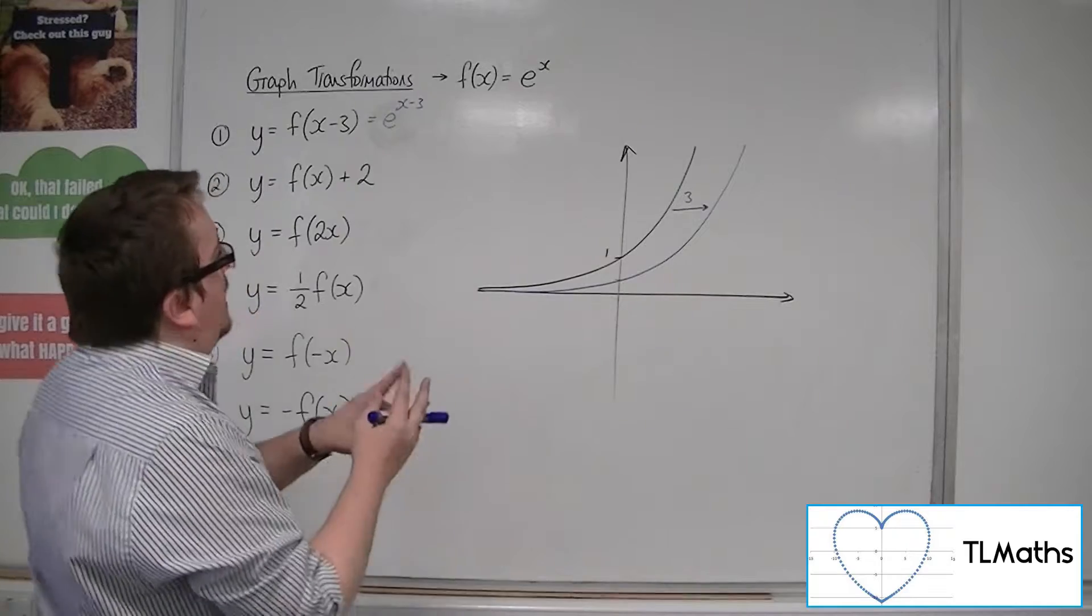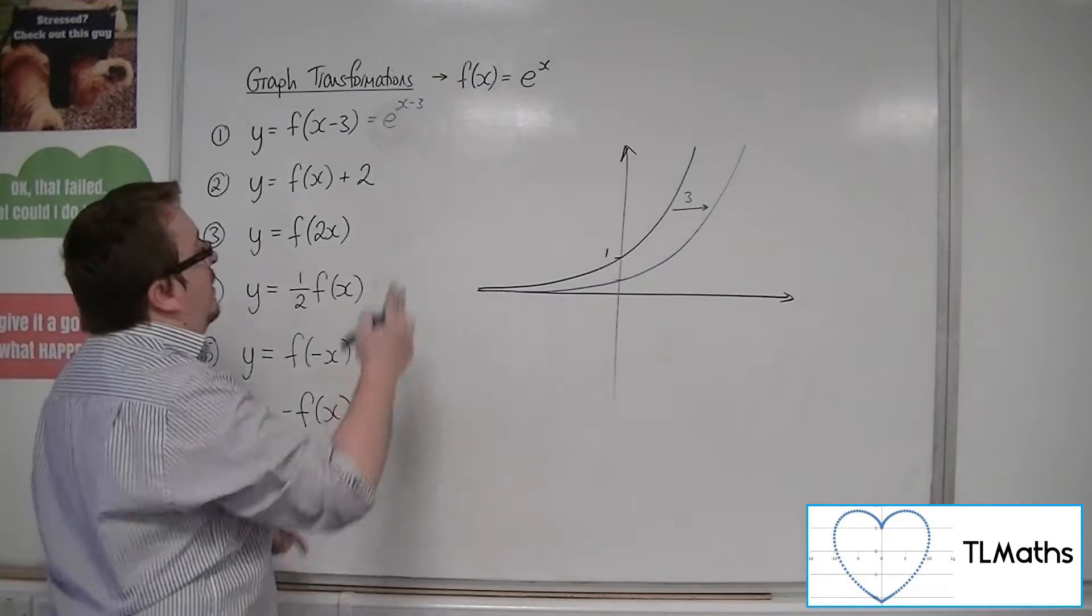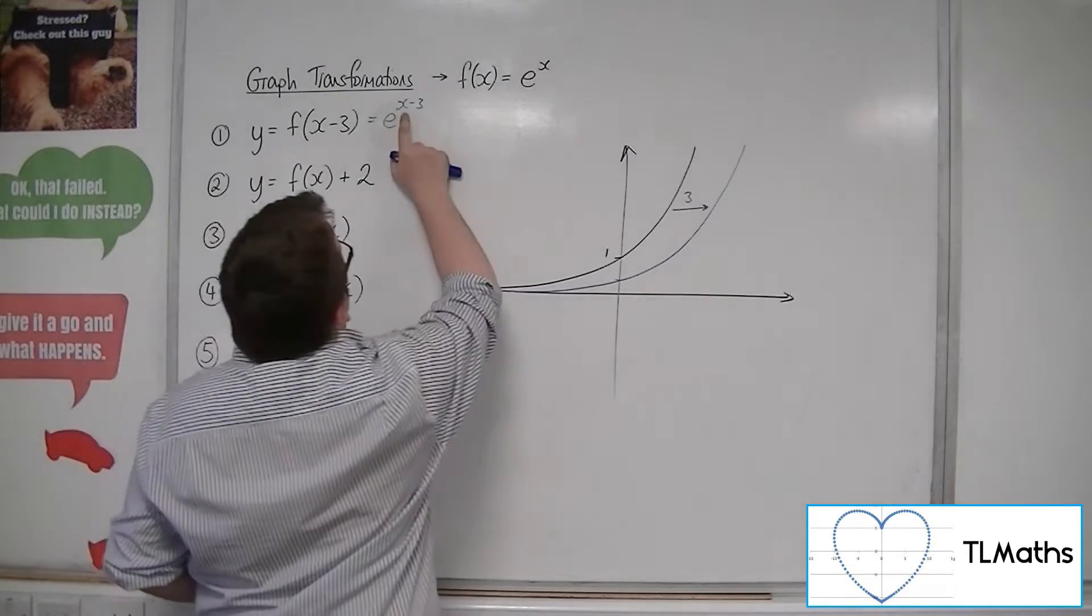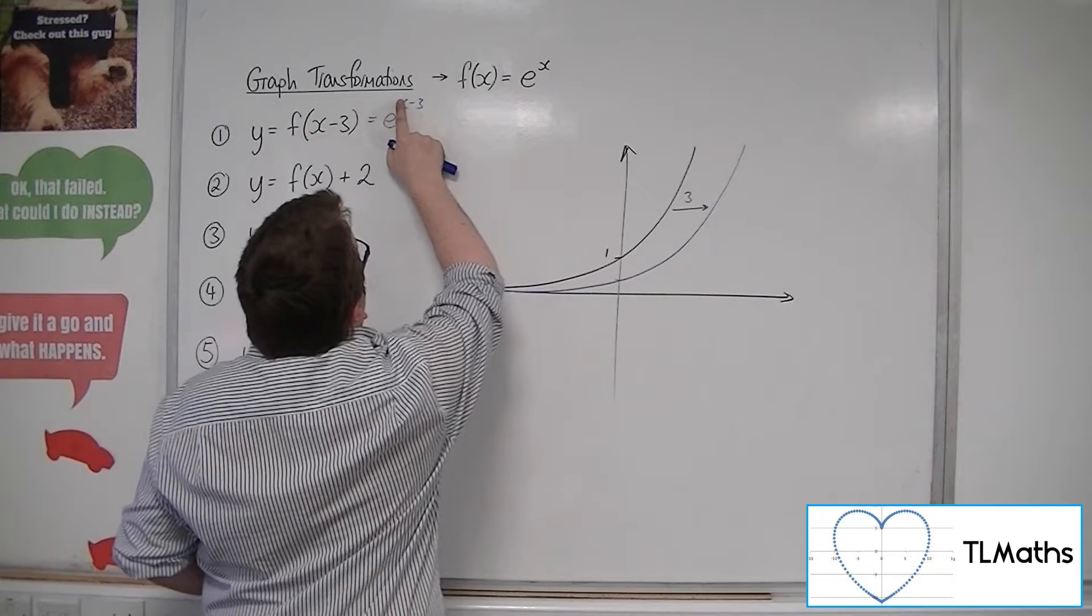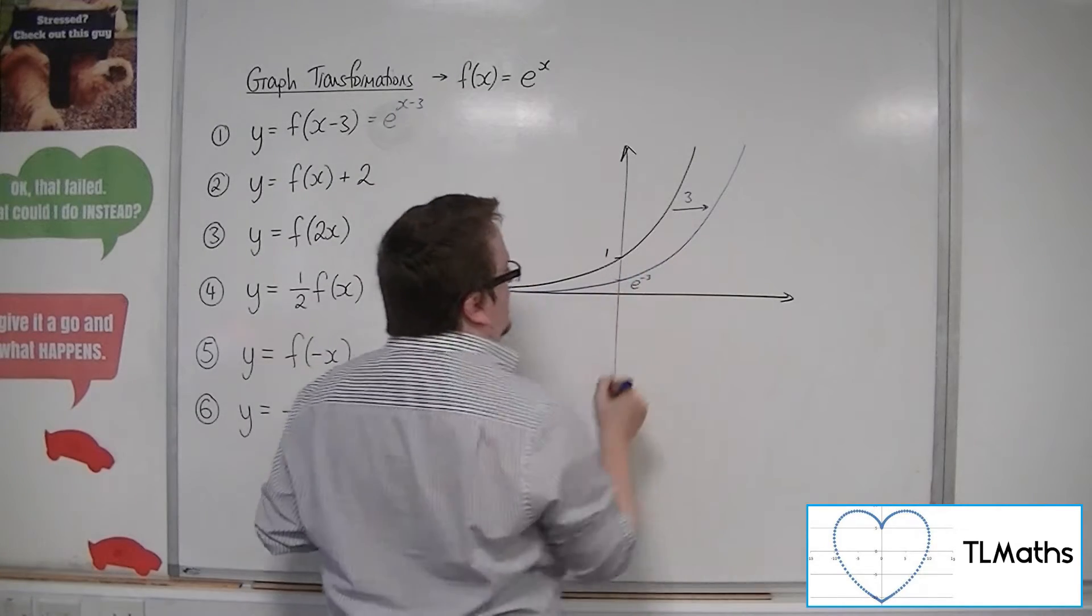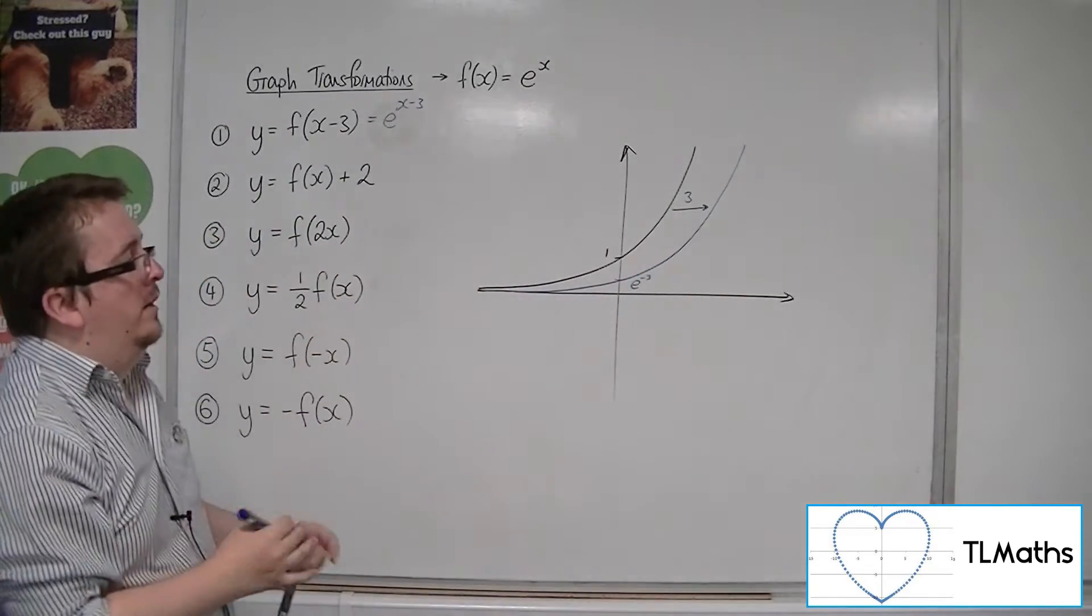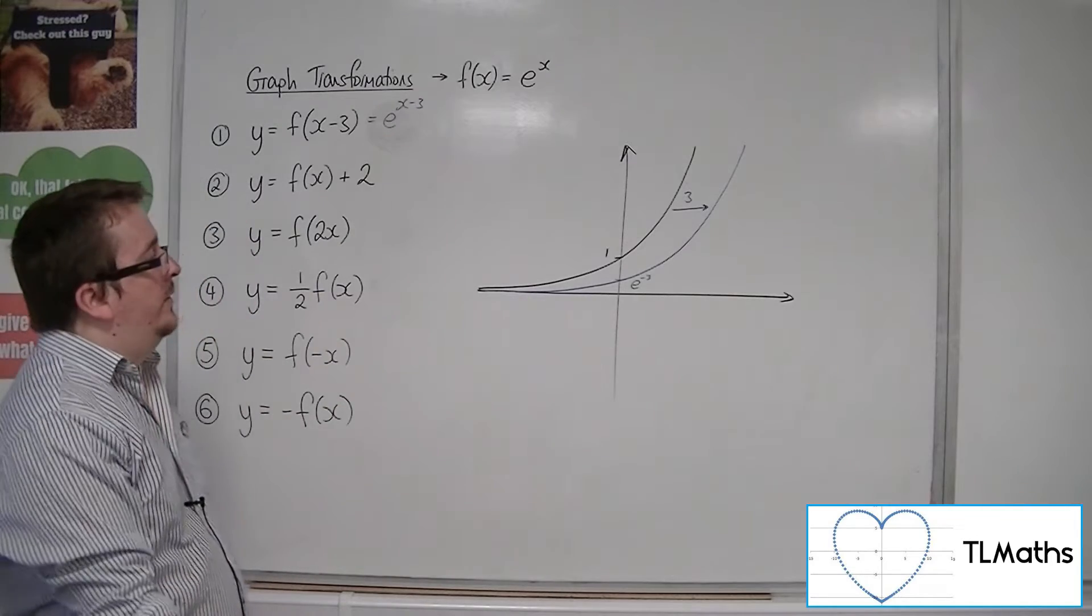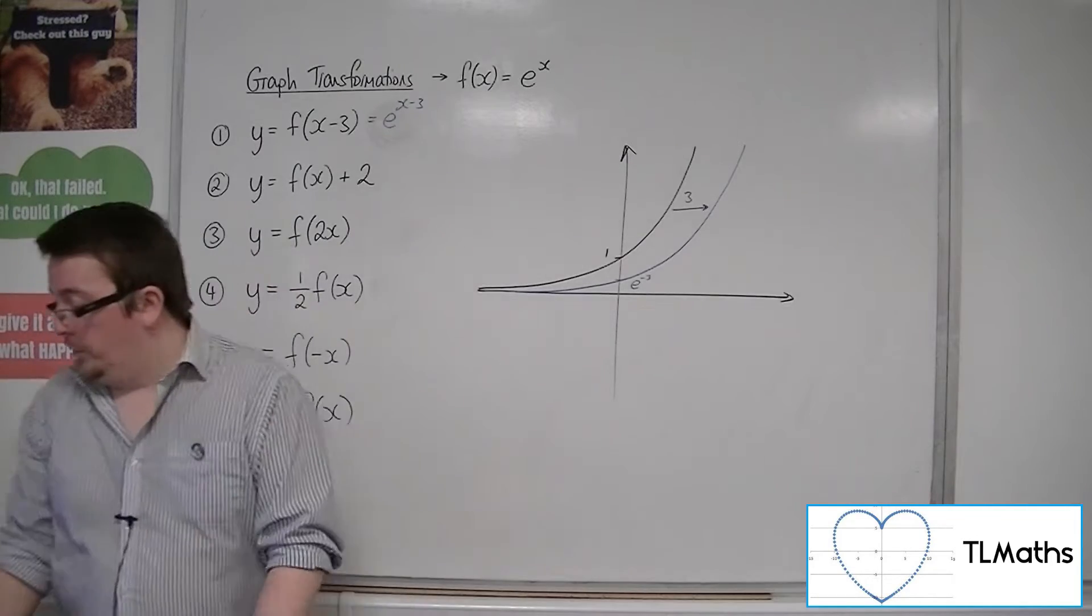Now, that's clearly when x is 0, because that's where the y-axis sits. So when we've got x is 0, we get e to the minus 3. So that is the exact number of where it crosses the y-axis. So that's what it would look like.